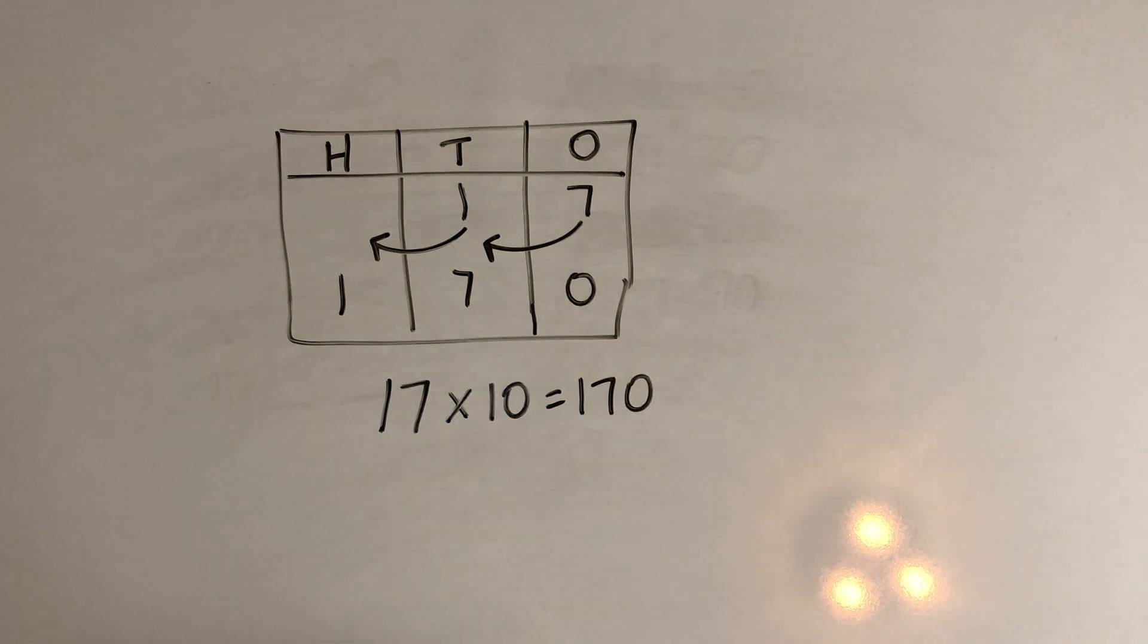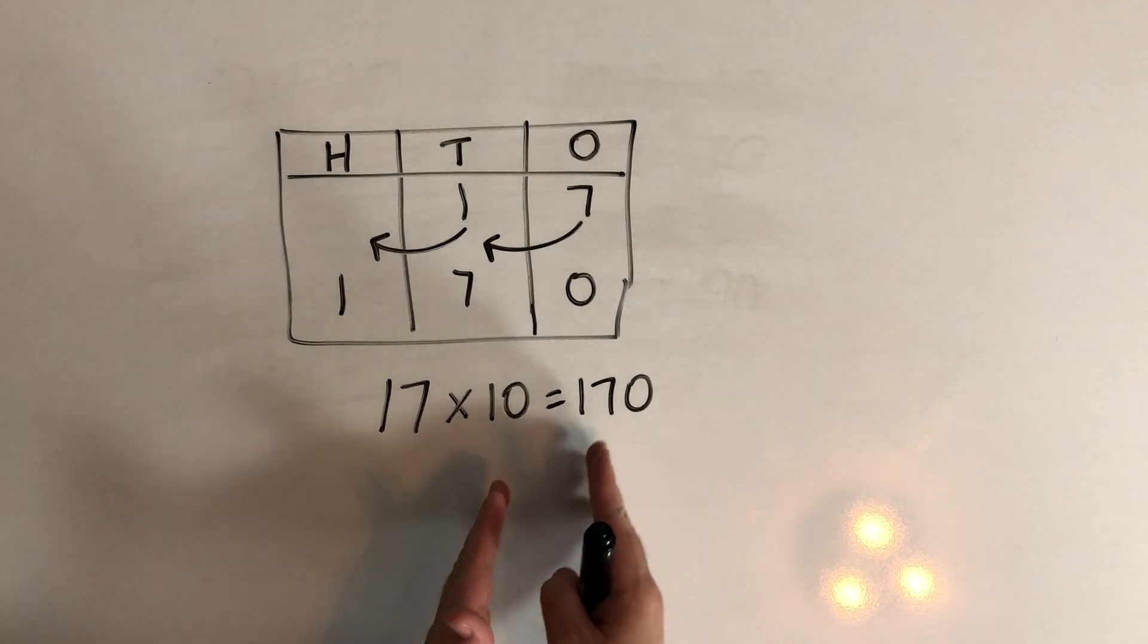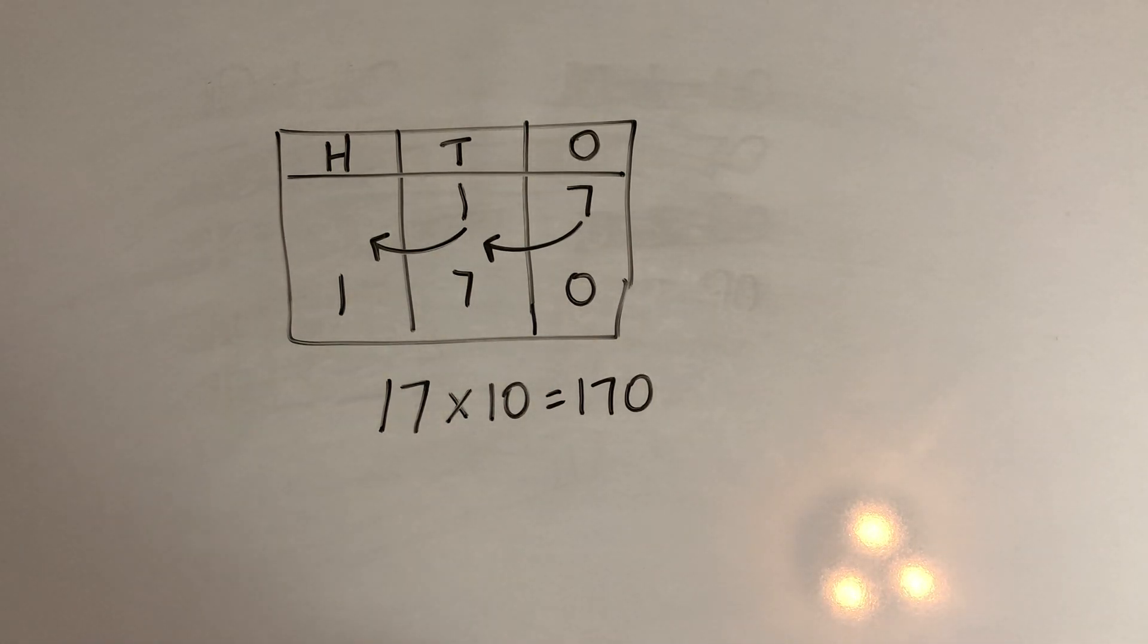So you can use this strategy when you multiply any number times 10. Just remember, all the digits shift one place to the left. I hope you enjoyed this strategy and be sure to check back very soon for more multiplication strategy videos. Have a great day.